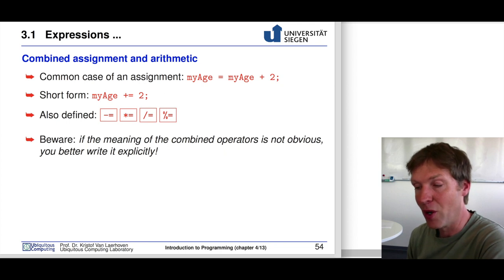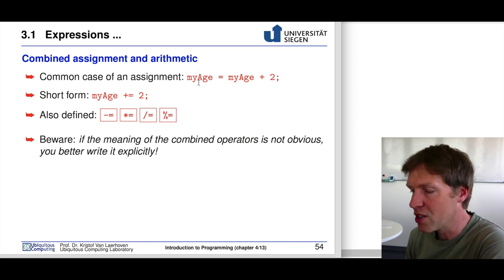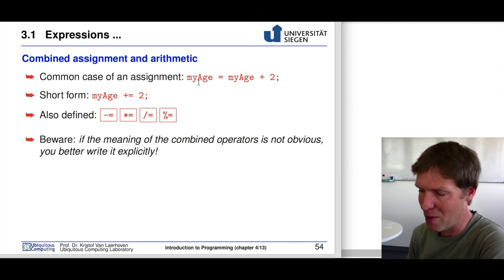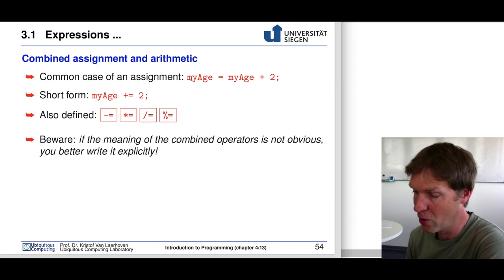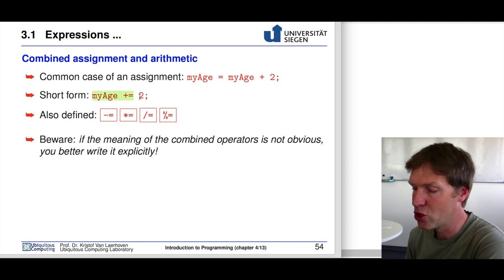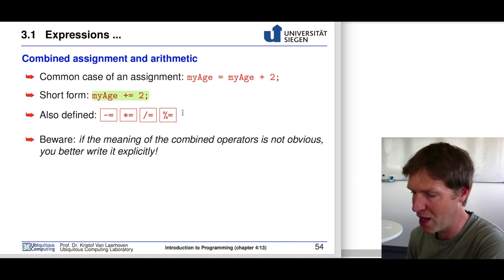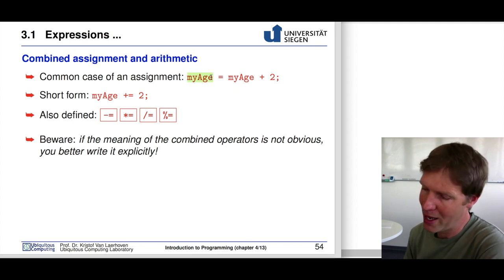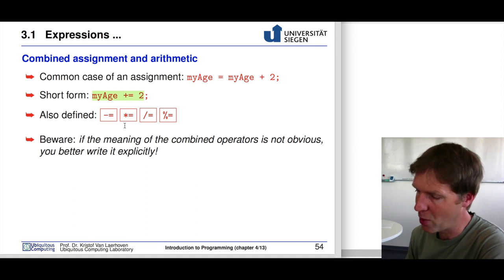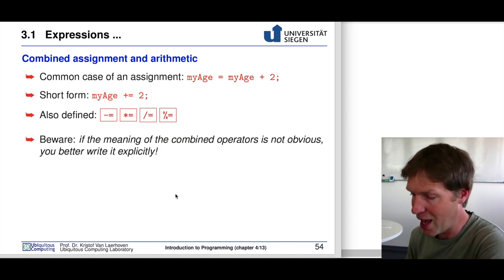Several things can be compressed in C and C++. When a variable is assigned to that exact same variable plus an operator, you can use shorthand notation for sum, minus, multiplication, division, and modulo. So if you have a variable on the left side and that variable on the right side with an operator, you can shorten it. For example, myAge plus equals 2 is exactly the same as myAge equals myAge plus 2.